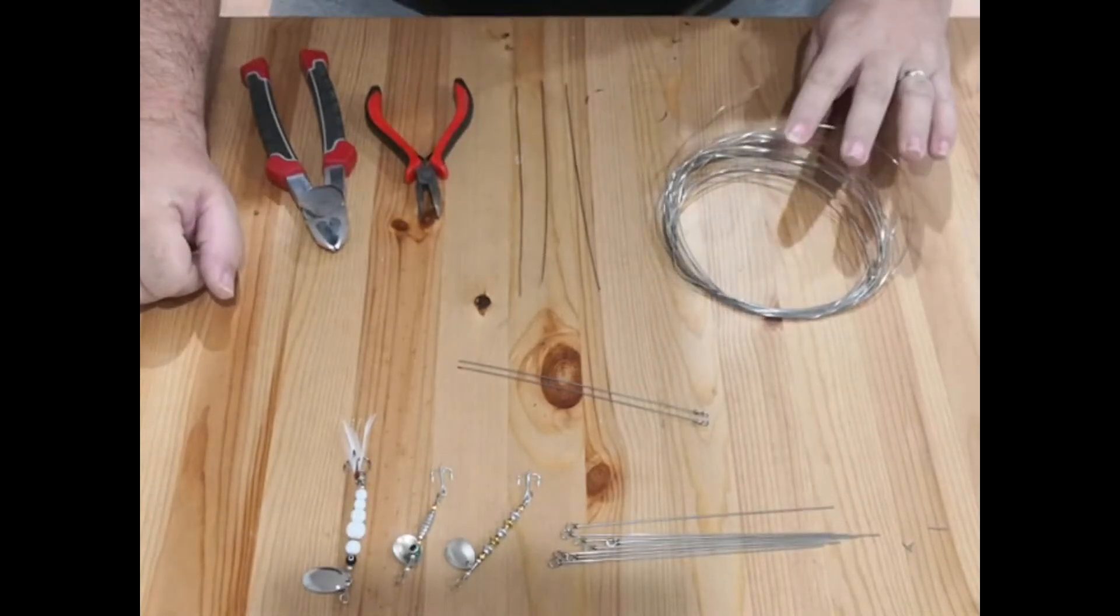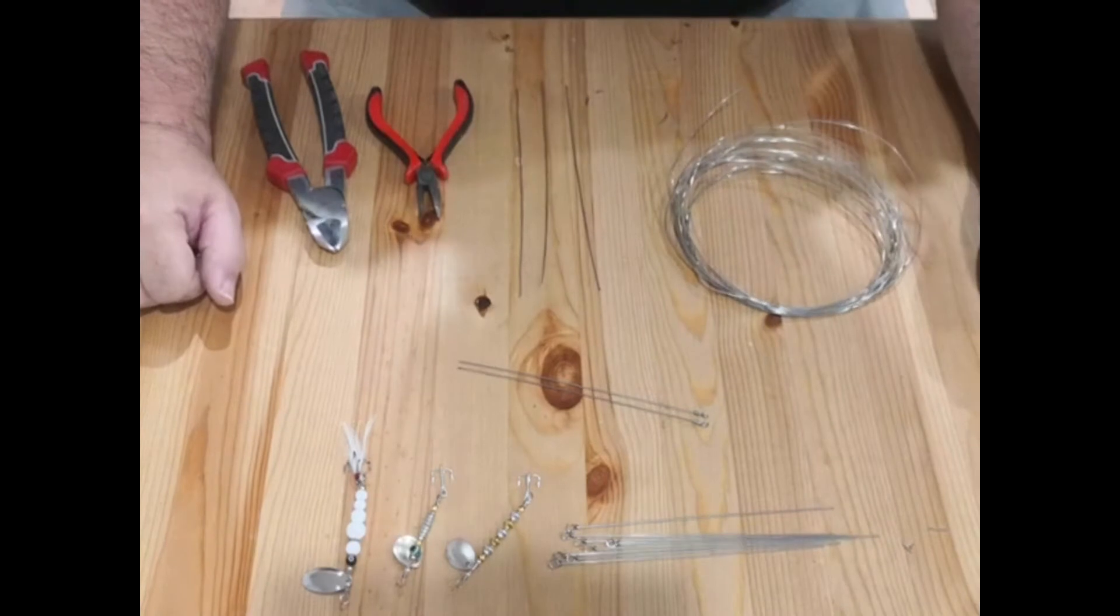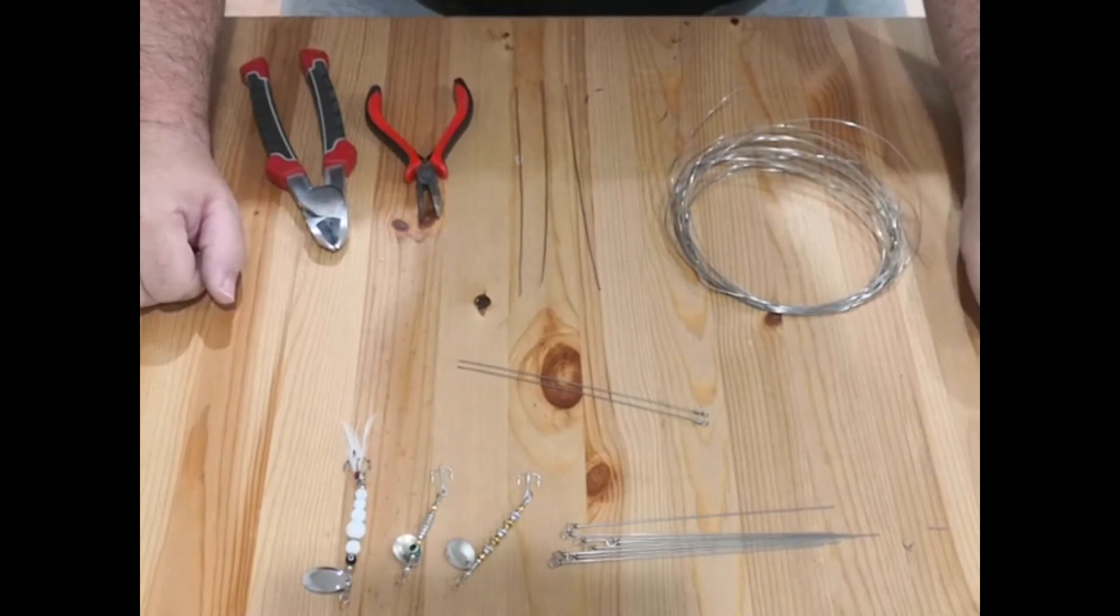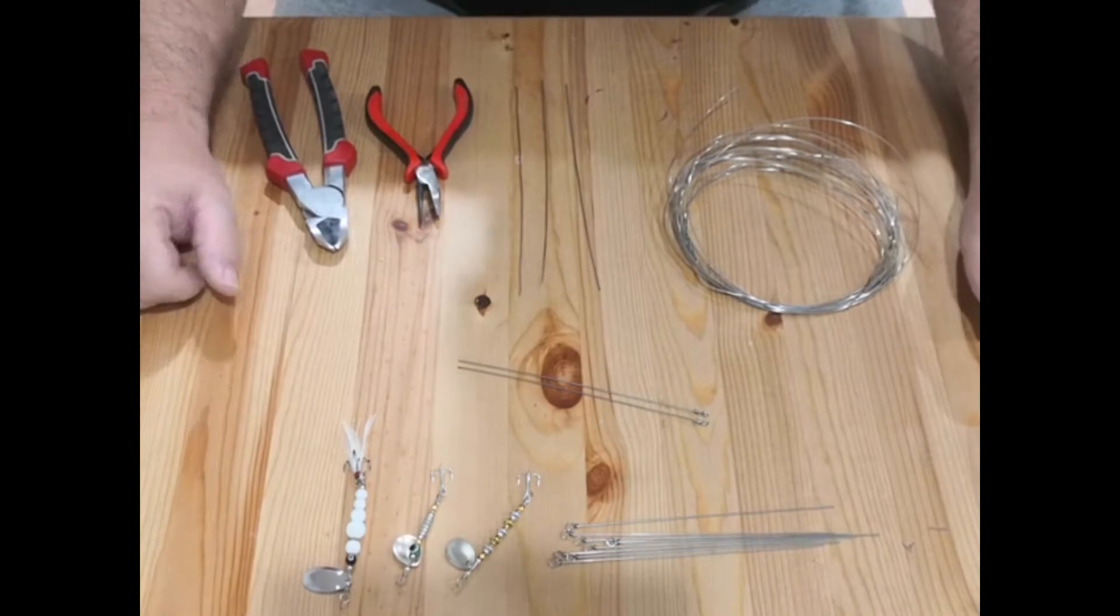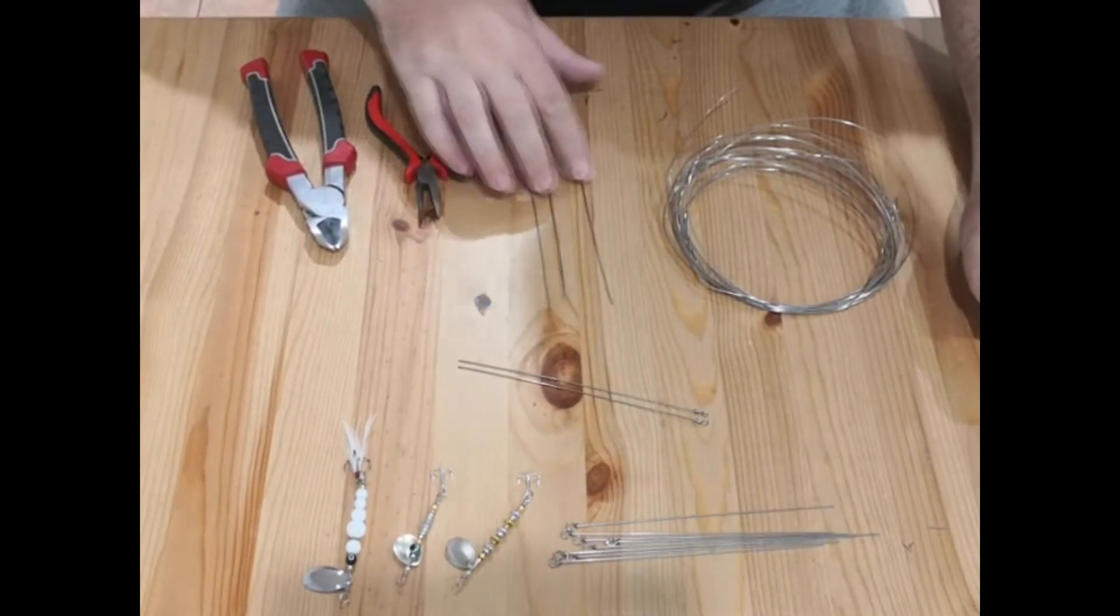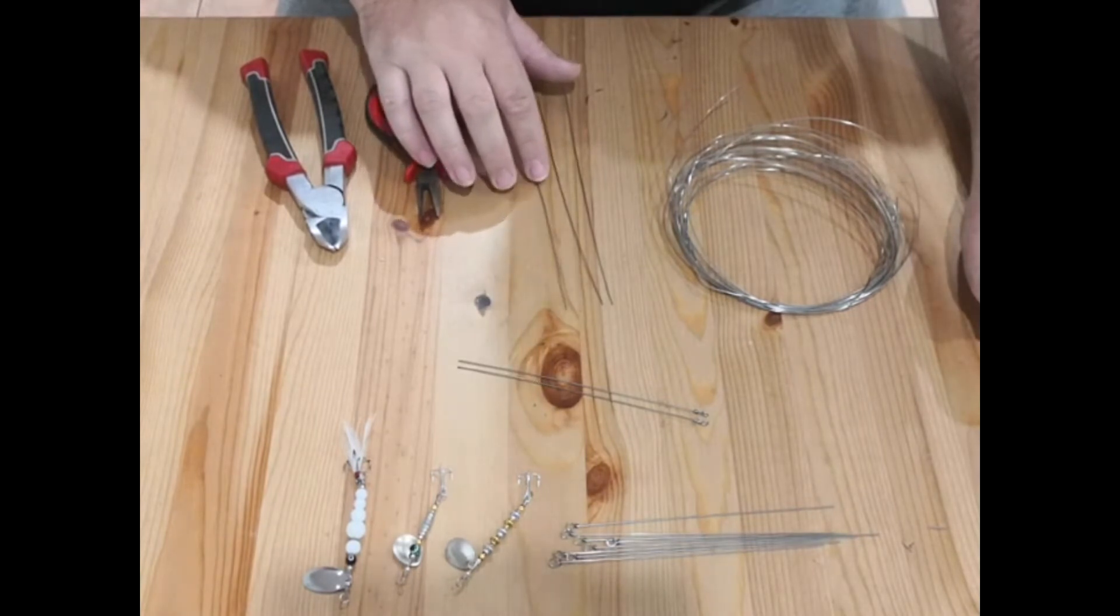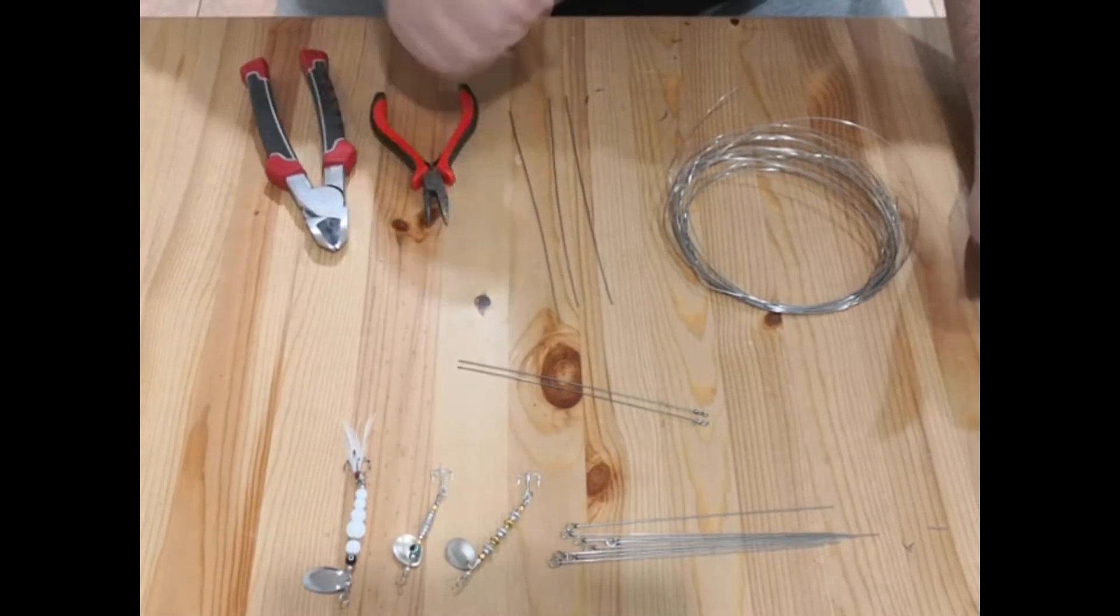So all we need for this is some stainless steel welding wire. You can use any wire you like. I find that 0.7 or 0.9mm is probably the best for this purpose. It's nice and strong, holds its shape but it's still malleable enough that you can form it by hand. We've got a few pieces here that we've cut to about 20cm or about 7 inches for our US friends, and straightened it out of course.